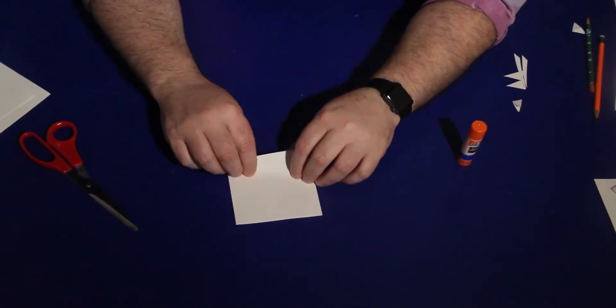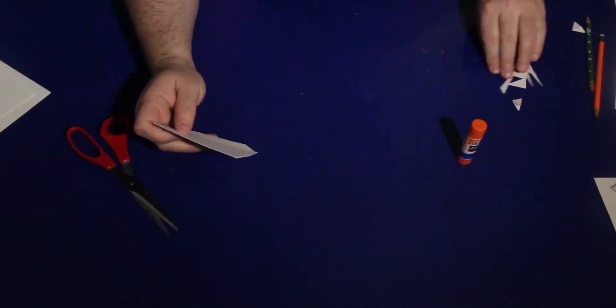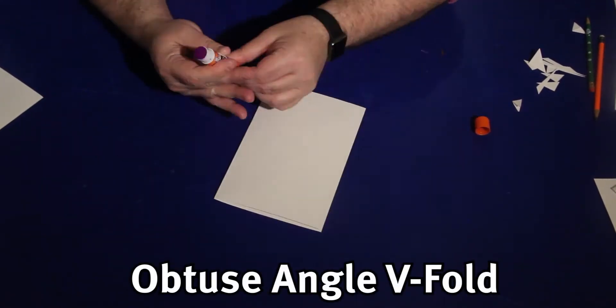By folding and cutting tabs on the strip so the crease is shorter than the edges, you create an obtuse angle V-Fold which will lean forward.